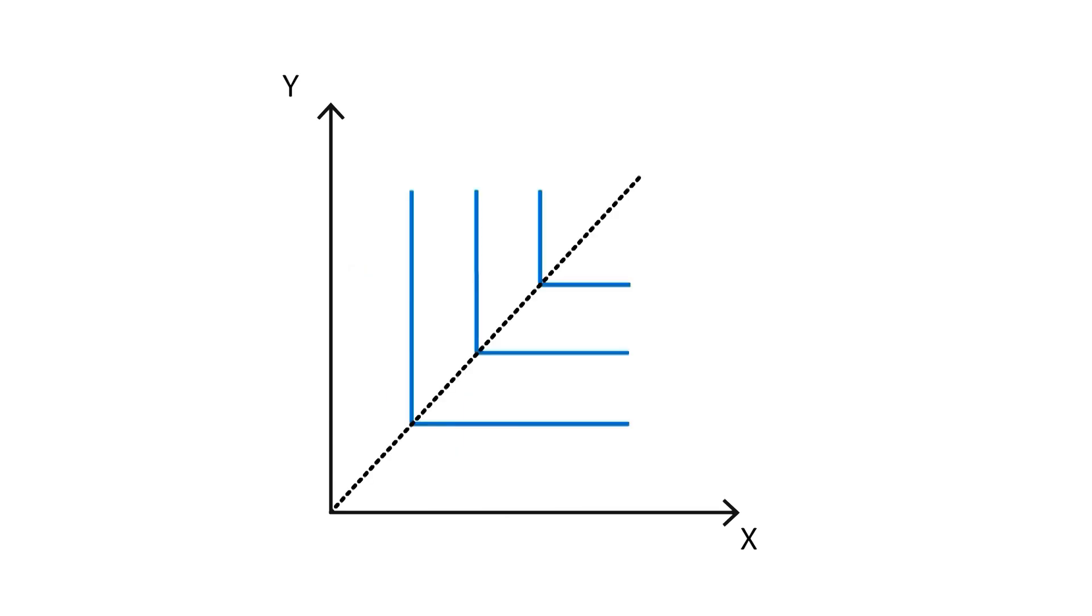Lastly, this graph shows an indifference map with three indifference curves that represent perfect complementary goods. This means there will not be an increase on the consumers' utility unless both goods increase in the required proportion. The best example of complementary goods are shoes, since the consumers' utility will not increase when he or she gets a new right shoe without getting a new left shoe.